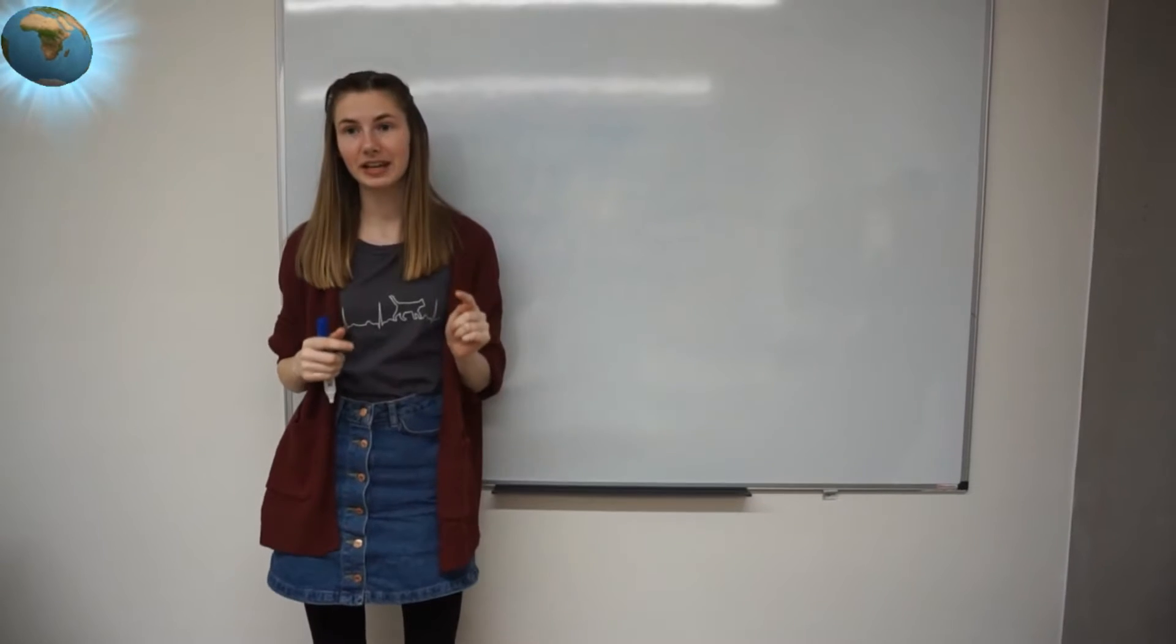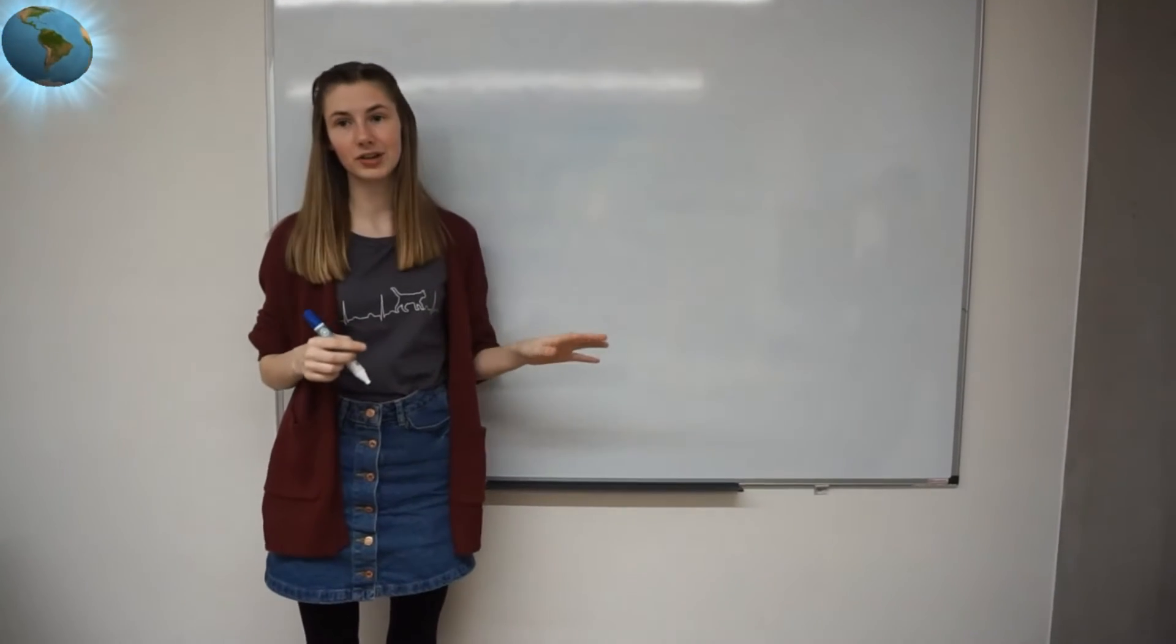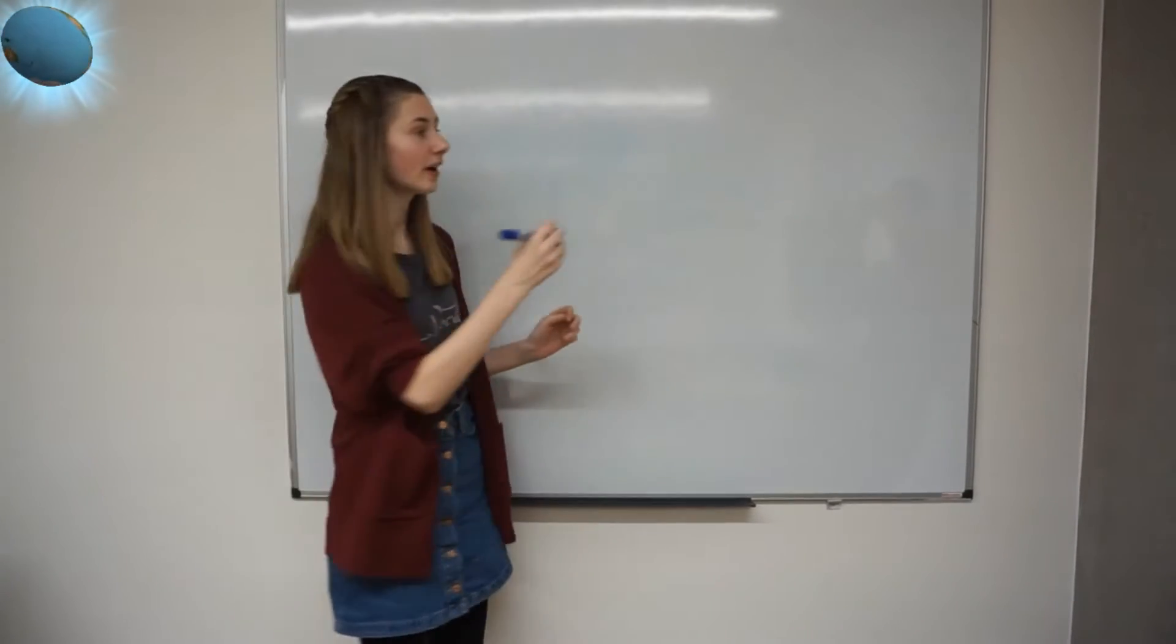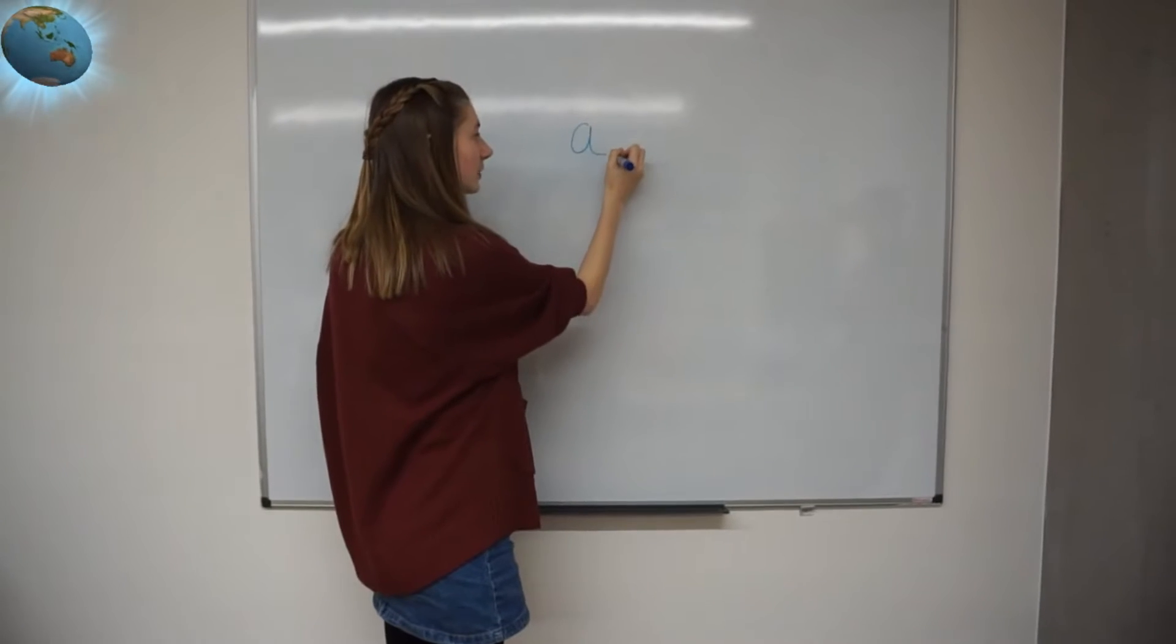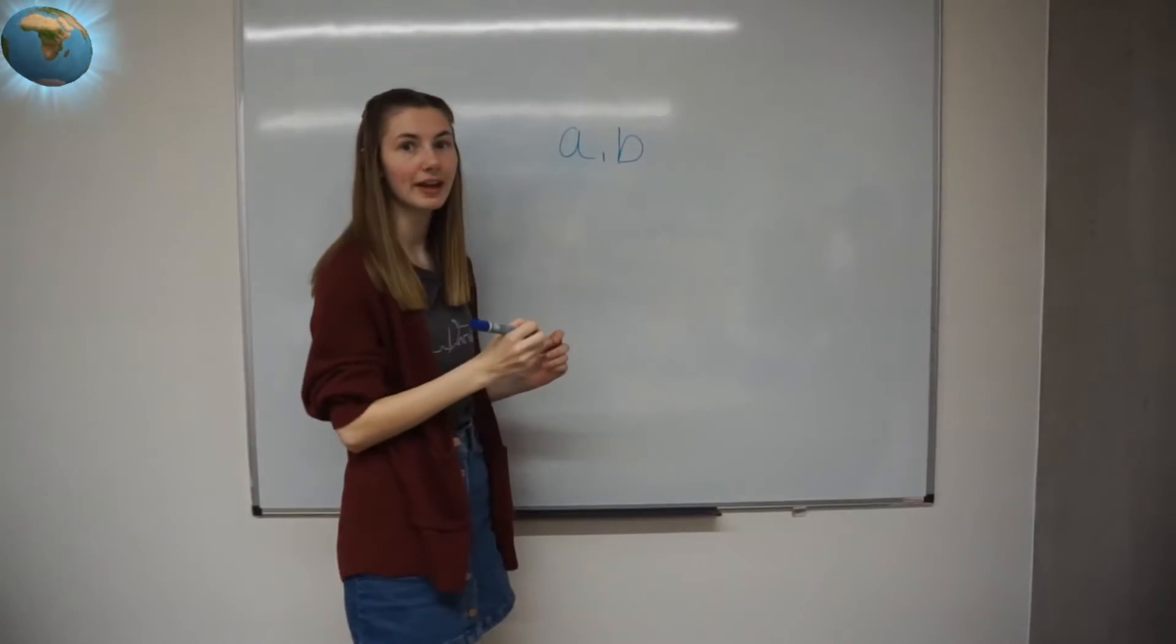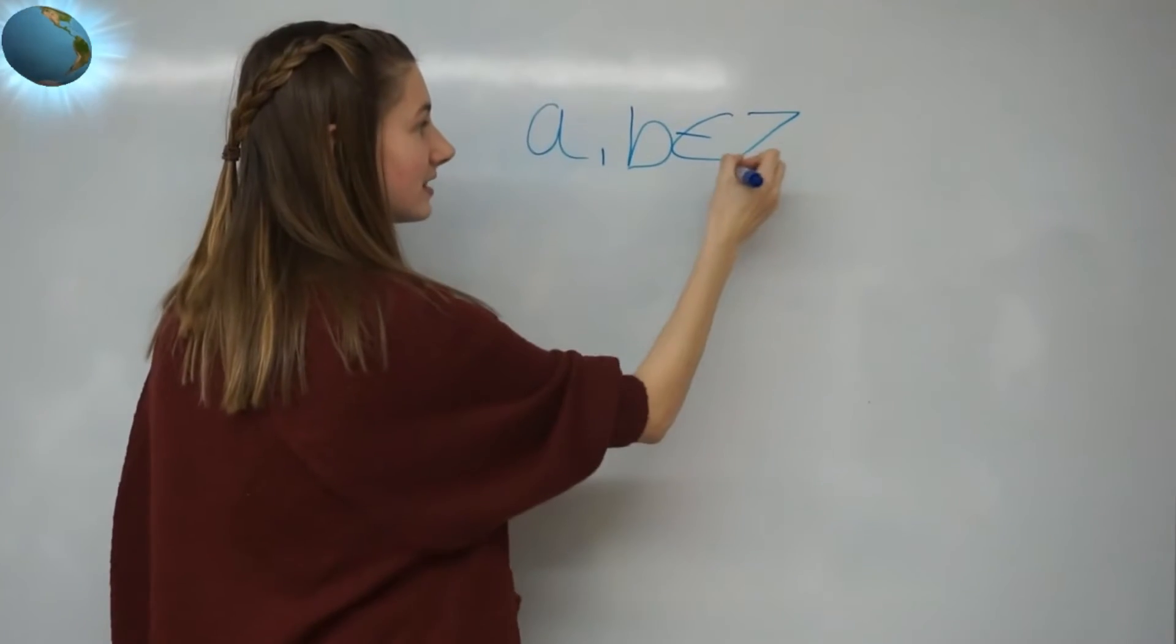If you don't know what modular arithmetic is, don't worry because I'm going to do a basic introduction right now. I'm going to define a and b to be integers, which just means that they're a whole number, and we can write this saying they are elements of the set Z.